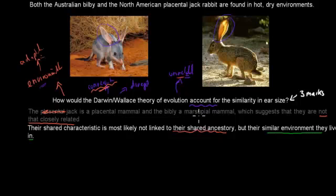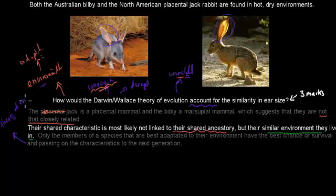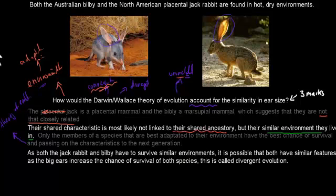This is to do with convergent evolution. Only members of a species that are best adapted to their environment have the best chance of survival and passing on characteristics to the next generation — this is the theory of evolution by Charles Darwin and Wallace. As both the jackrabbit and the bilby have to survive in similar environments, it's possible that both have similar features, as the big ears increase the chance of survival of both species.